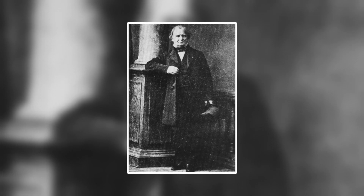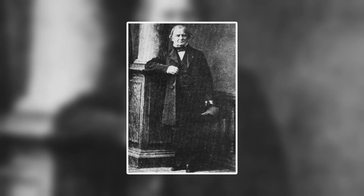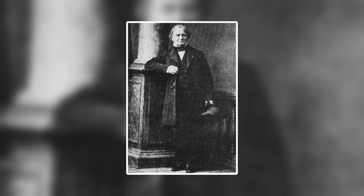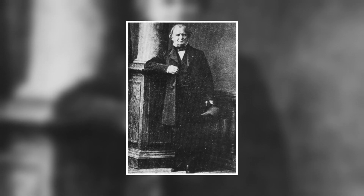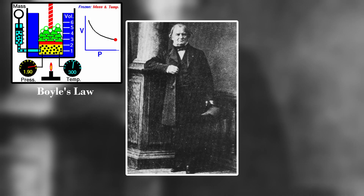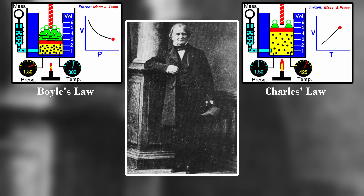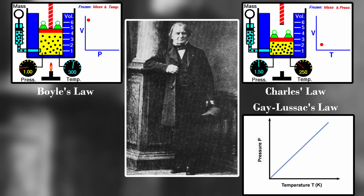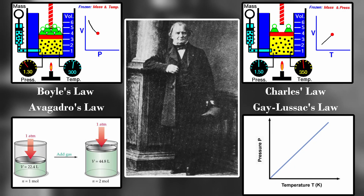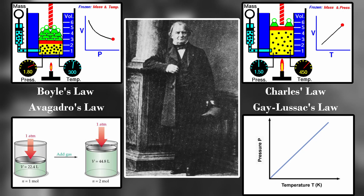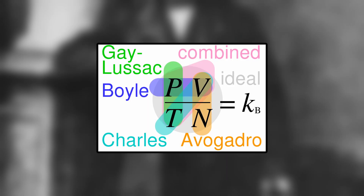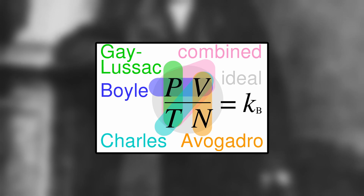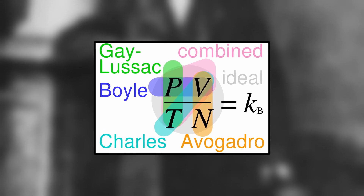In the year 1834, Emile Clapeyron wove together the threads of Boyle's Law, Charles' Law, Gay-Lussac's Law, and Avogadro's Law into a single entity, the Ideal Gas Law.